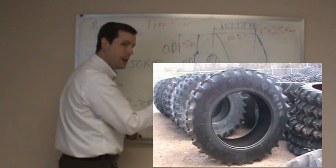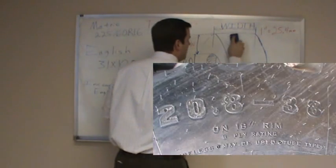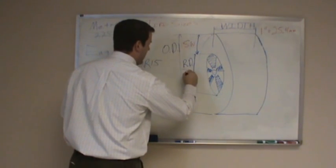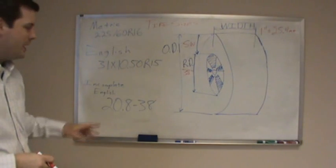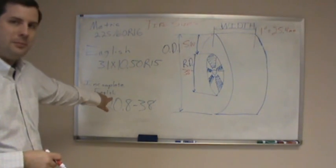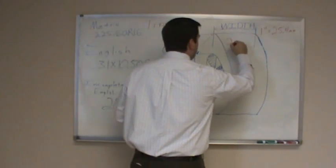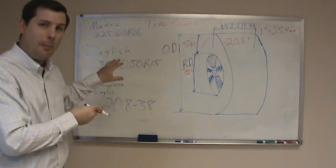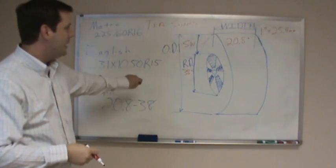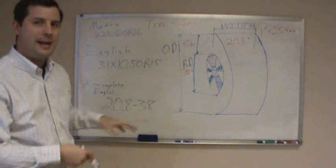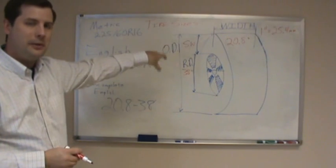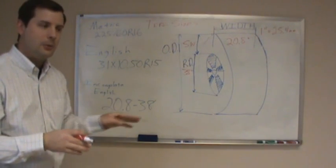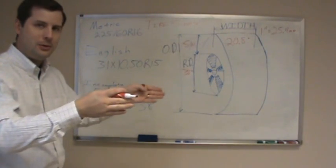The last size is the tractor size: 20.8/38. The only thing common with all three sizes is that the last number is the rim diameter — so 38 is the rim diameter in inches. The 20.8 is the width in inches. You only have one number instead of two, which may surprise some people. Something important to note: within different brands or styles, the sidewall height may differ from one tire to the next. If you're running a four-wheel-drive tractor, you don't want to mess up the gear ratios — you need the right height ratio between tires to stay on level footing.